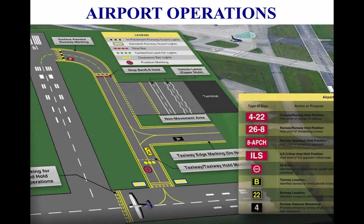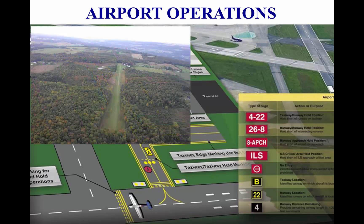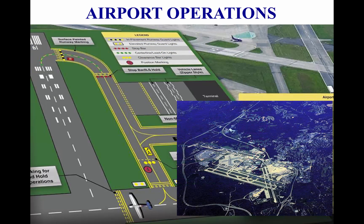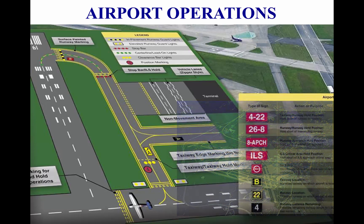This tutorial covers airport operations. Each time a pilot operates an aircraft, the flight normally begins and ends at an airport. An airport may be a small sod field or a large complex utilized by air carriers. This chapter examines airport operations, identifies features of an airport complex, and provides information on operating on or in the vicinity of an airport.